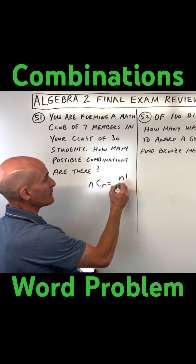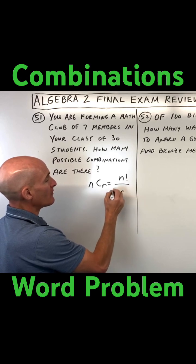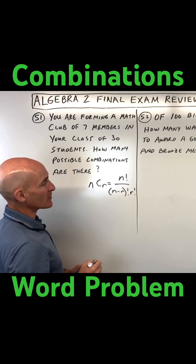So the formula here is N factorial over N minus R factorial times R factorial.